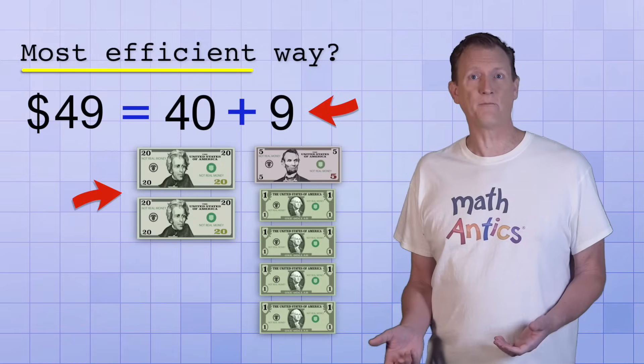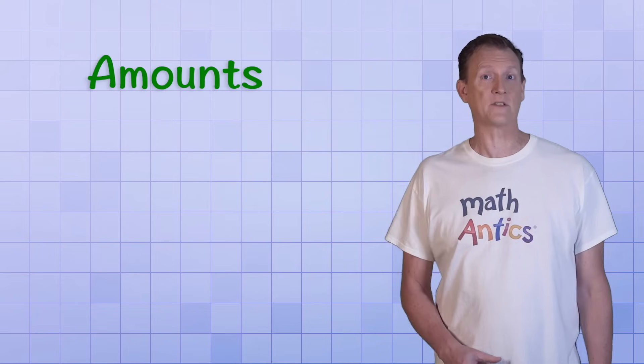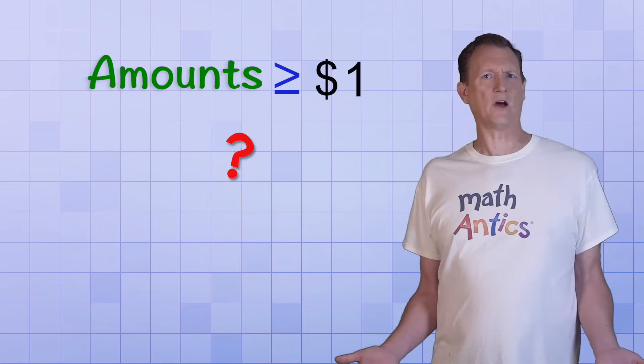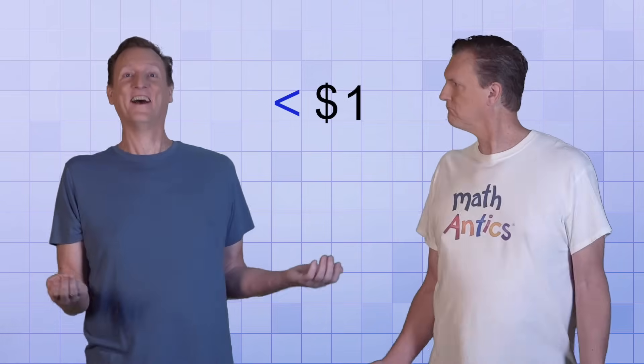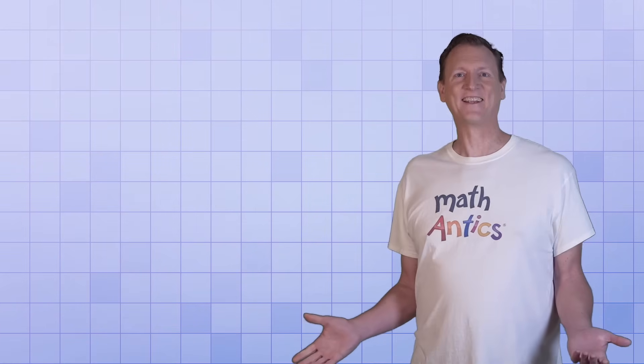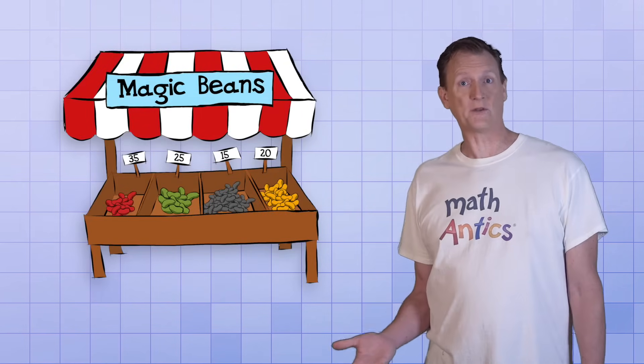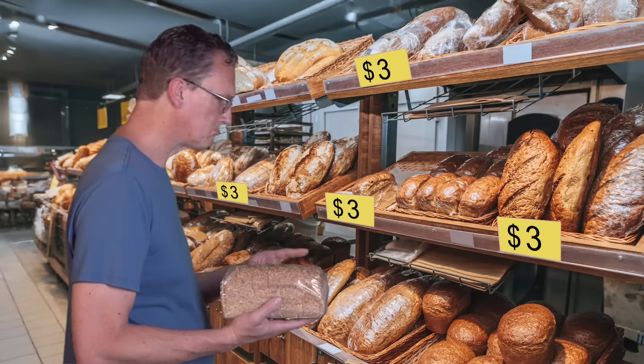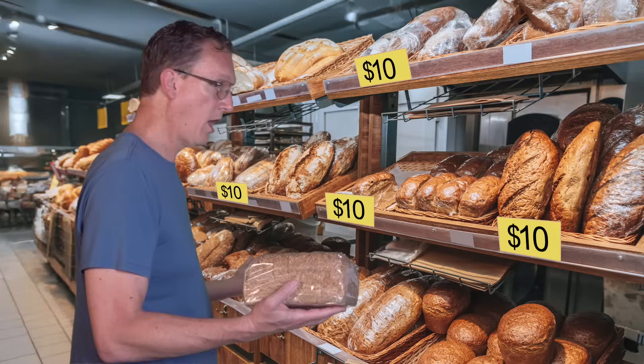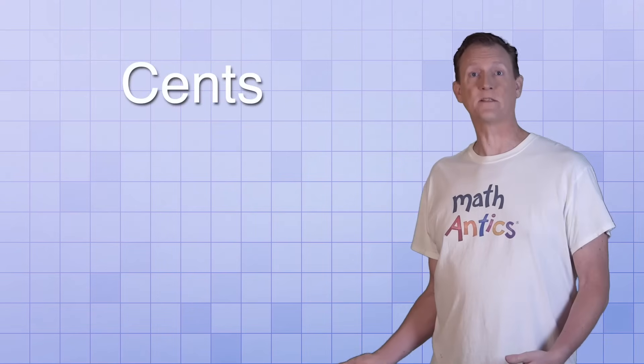Are you starting to see how math and money work together? You may have noticed that we've only been talking about amounts that are greater than or equal to one dollar. What about things that cost less than a dollar? Everything costs hundreds of dollars these days. Well, that's a good point — there aren't very many things that you could buy for less than a dollar nowadays. But there's still a need to represent amounts smaller than a dollar. Fortunately, thanks to cents, it doesn't have to increase by a whole dollar each time.